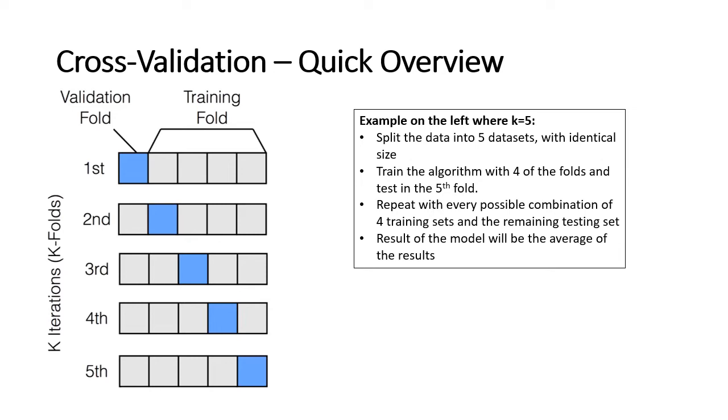And you would do this five times, always with a different square that's going to be left out. And then the result of the model will be the average of the results of each iteration individually.